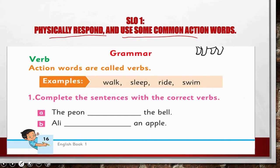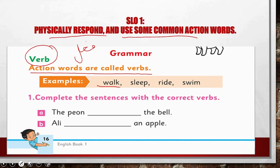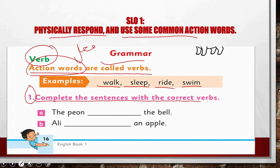Physically respond to some action words. Action words are called verbs — unko feel kiya jata hai. Jaise ke walk (chalna), sleep (sona), ride (gaadi mein safar karna), swim (tairna). Action words are called verbs — wo alfaaz jinse kisi kisi ki activity, koi harkat ya koi amal hota wa nazar aaye, unko verb kehte hain.